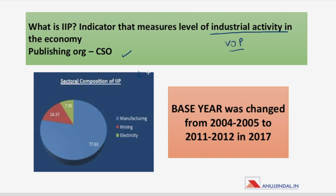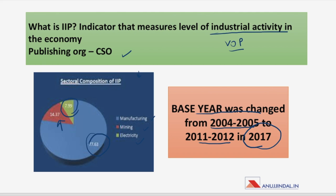Three sectors are considered for calculating IIP: manufacturing, mining, and electricity. Manufacturing comprises 77.6% weightage, mining is 14.37%, and electricity has the lowest weightage at 7.99%. IIP is also classified on the basis of uses. Additionally, the base year was changed from 2004-05 to 2011-12 in 2017, with recent changes made on 12th May 2017.